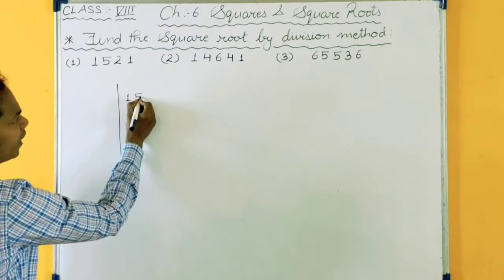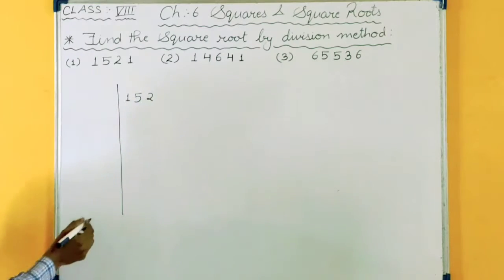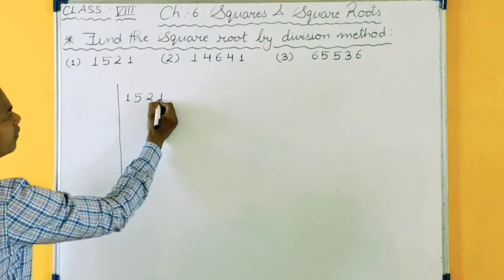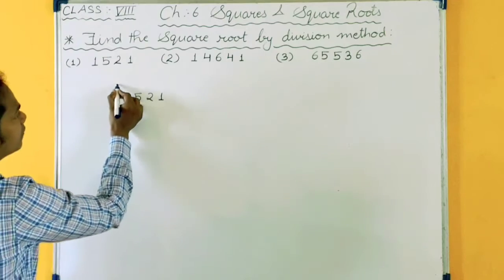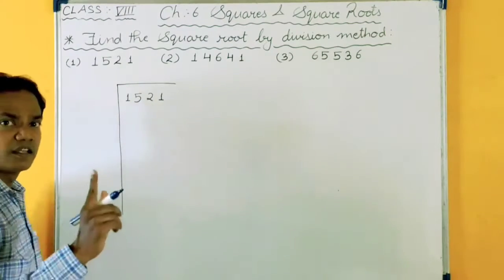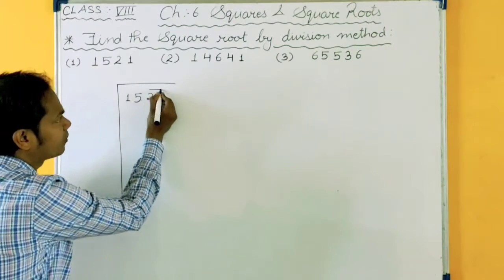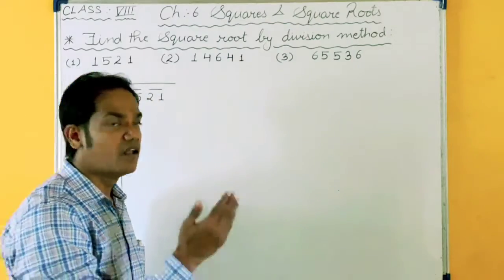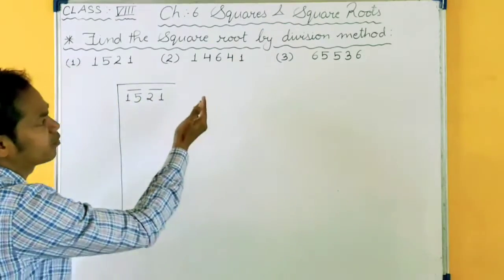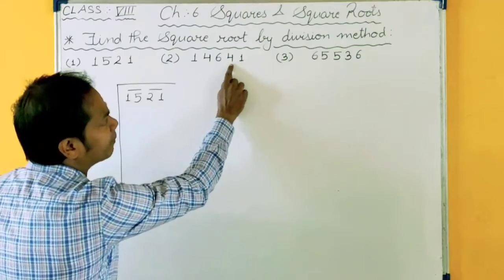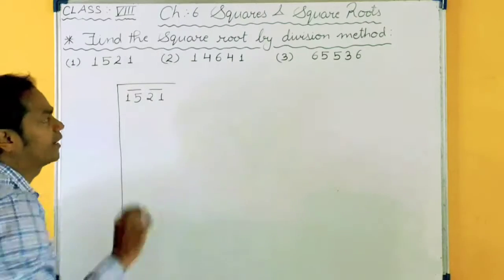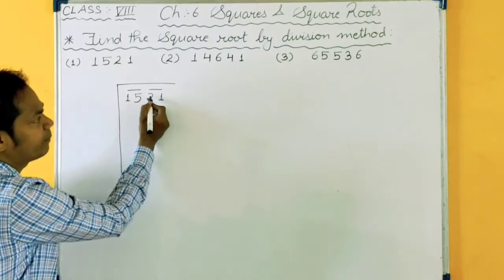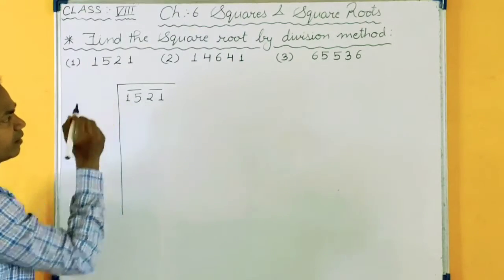So this is the first step to find square root. Write 1, 5, 2, 1 like this. Now make pairs from the right hand side. Always in finding square root by division method make pair from right hand side. So I have made pair of 21 and 15.